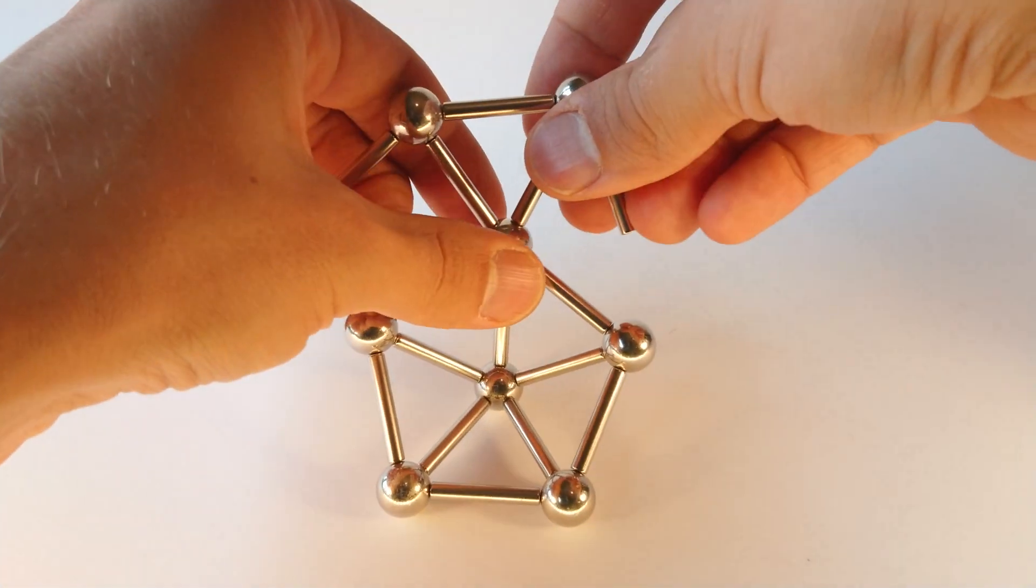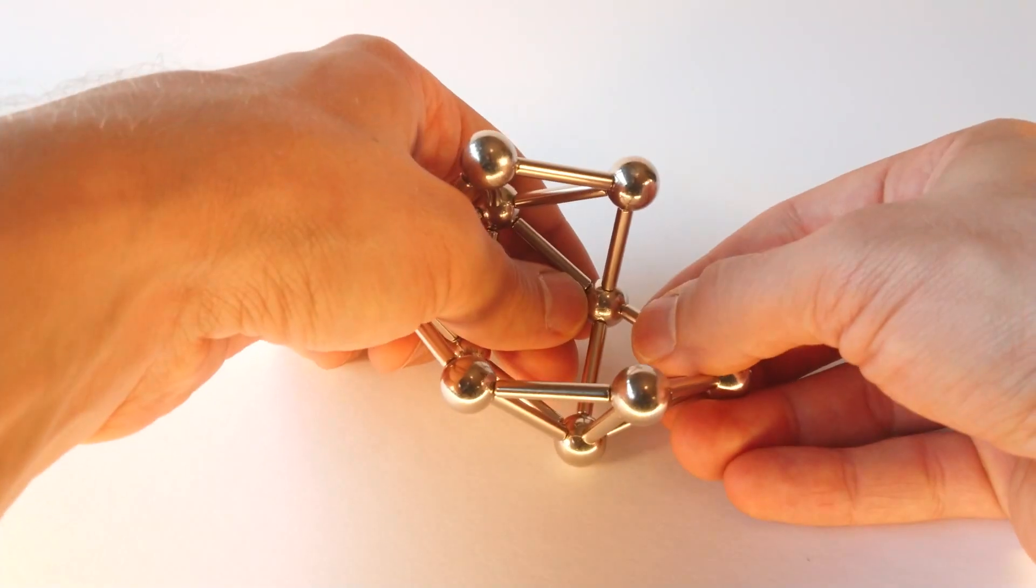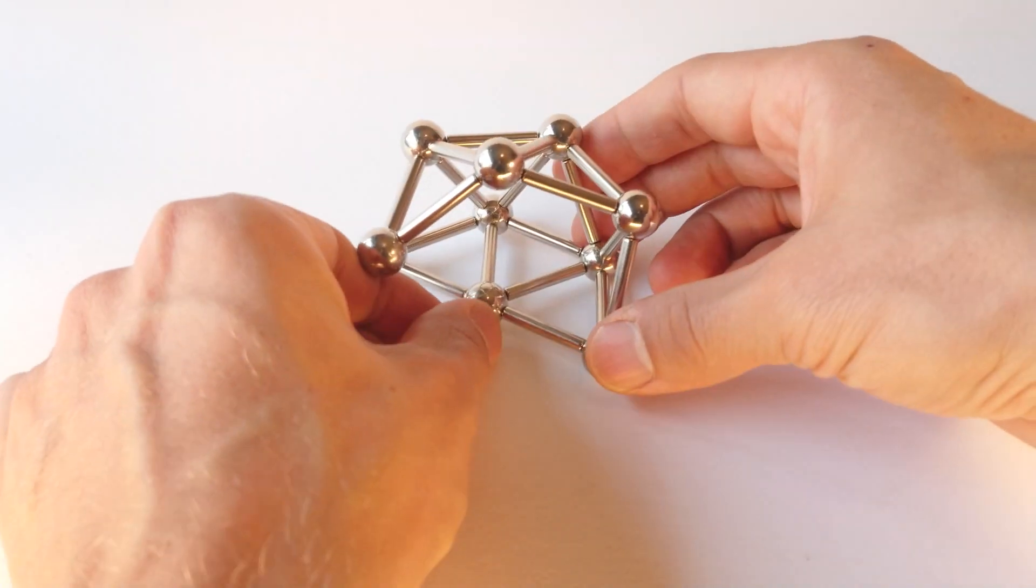Icosahedron consists of twenty equilateral triangles, with five of those triangles meeting at each corner.